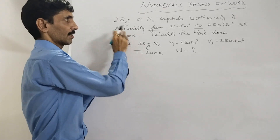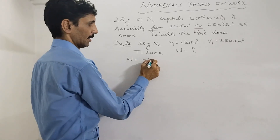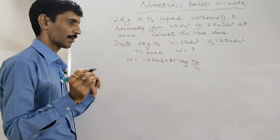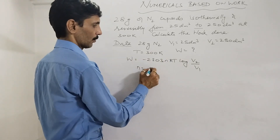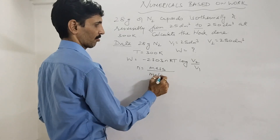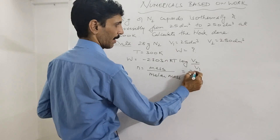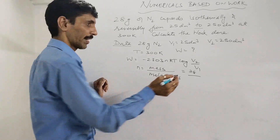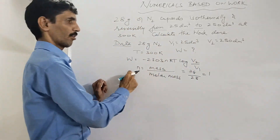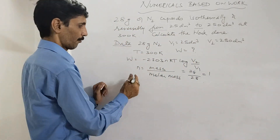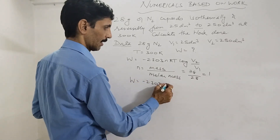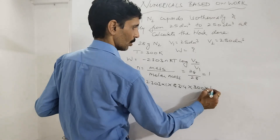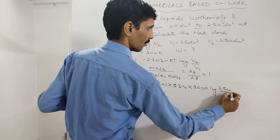There is no constant pressure, so the formula is W = −2.303 nRT log₁₀(V2/V1). Calculating n: mass/molar mass = 28/28 = 1 mol (nitrogen is diatomic: 14+14=28). Substituting: W = −2.303 × 1 × 8.314 × 300 × log(250/25). Since 250/25 = 10, log(10) = 1.